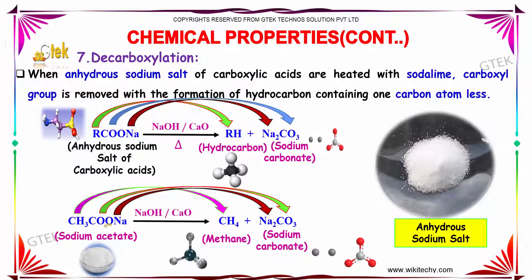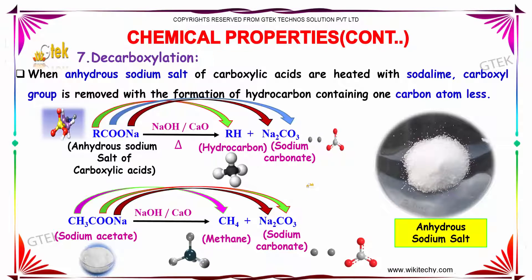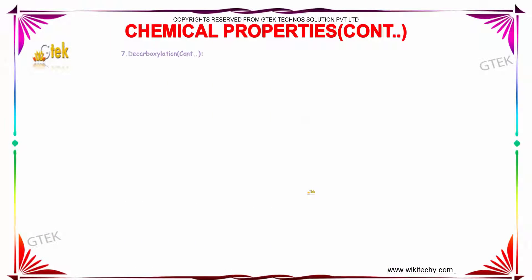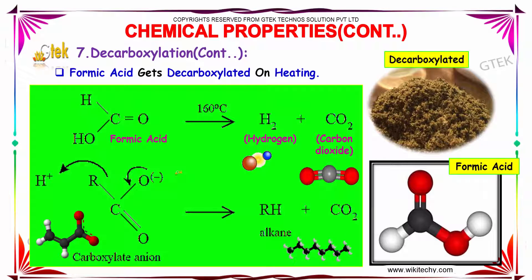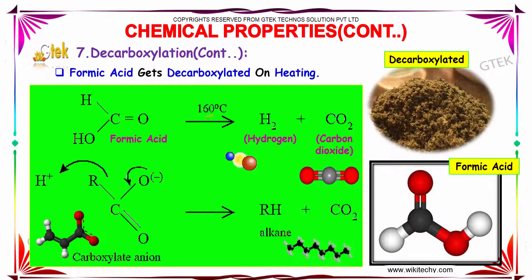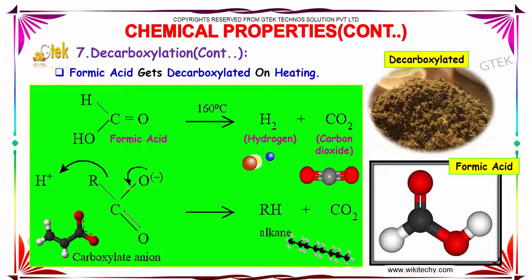When sodium acetate is heated in the presence of sodium hydroxide and calcium oxide, it produces methane and sodium carbonate. Formic acid undergoes decarboxylation on heating — at 160 degrees Celsius it produces hydrogen gas and carbon dioxide. This reaction follows the carboxylate anion mechanism to produce alkane and CO2.